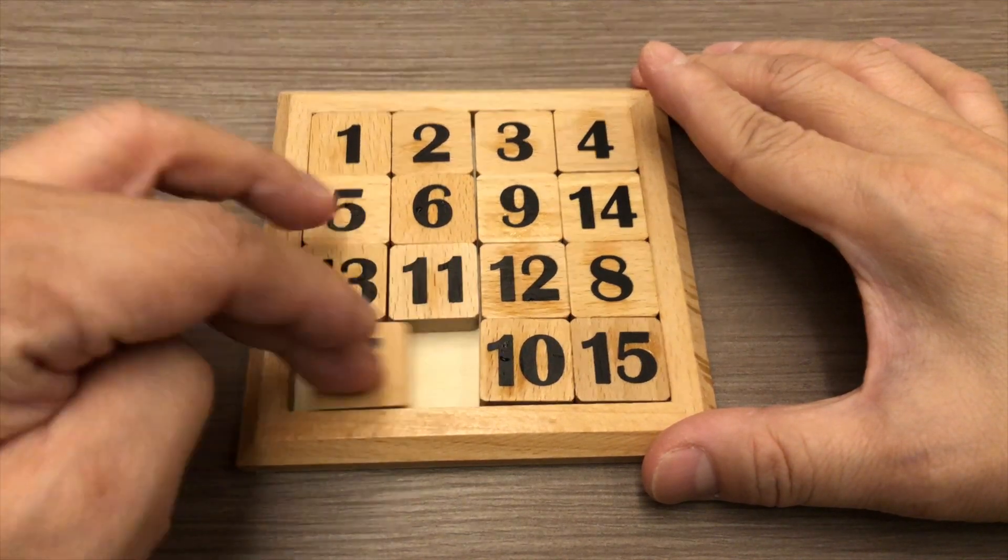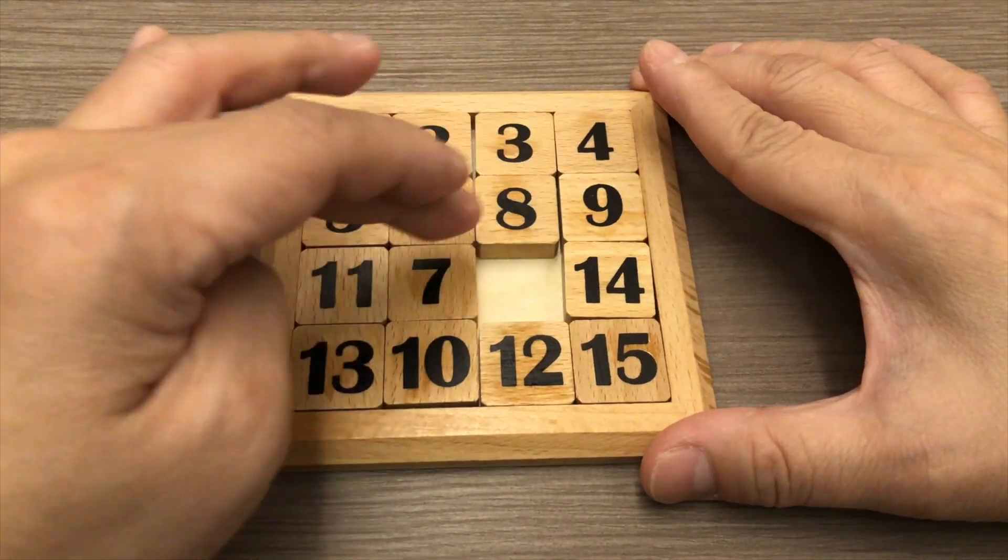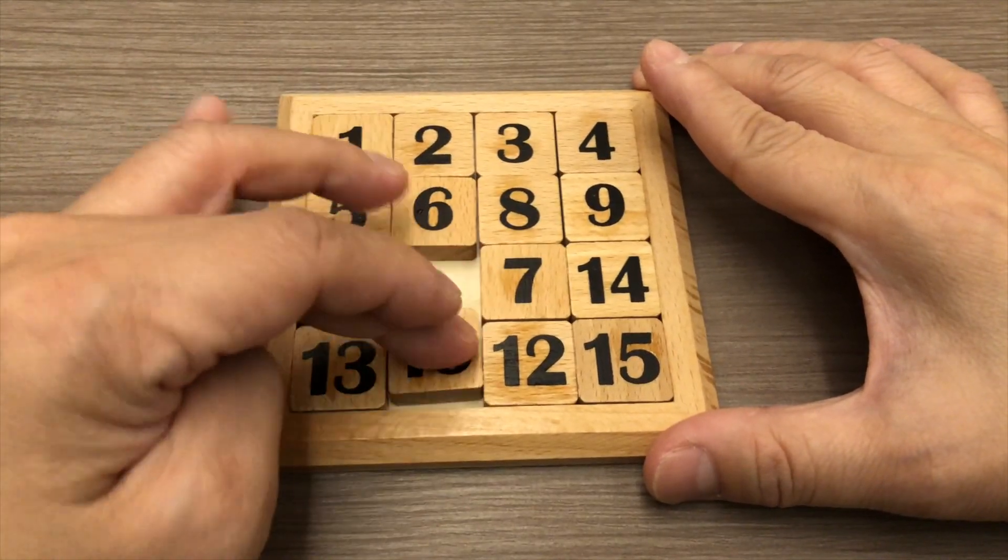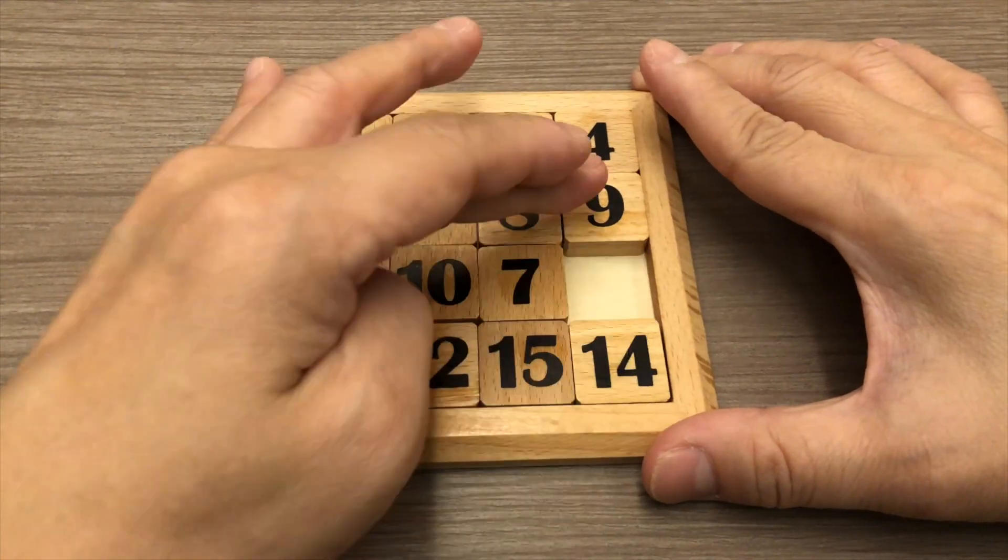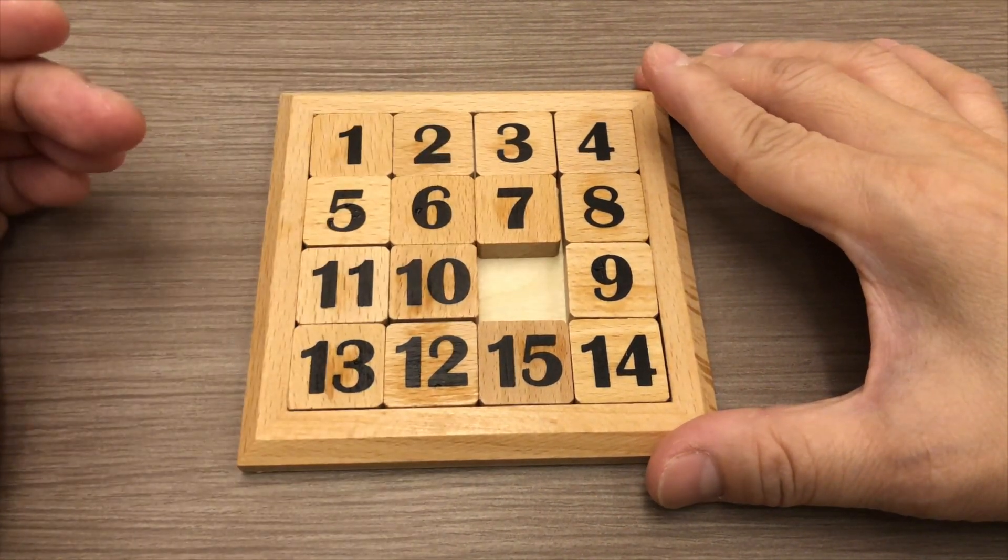For 7 and 8, you do the same tactic as what we have done earlier by putting 7 behind 8 like so. When you slide the tiles, you can put 7 and 8 in the right location.